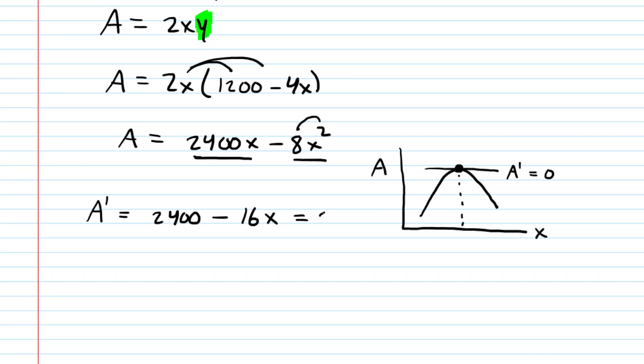So then we'll go ahead and set this equal to 0. Let's subtract 2,400 from both sides, canceling it on the left side. And then we will divide both sides by negative 16, and doing so gives us a value of x. This is going to equal 150 feet.